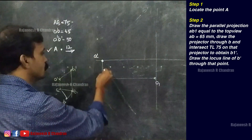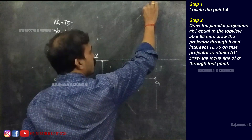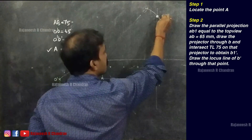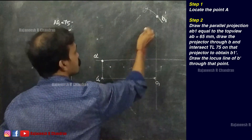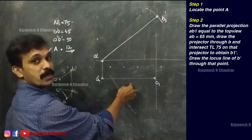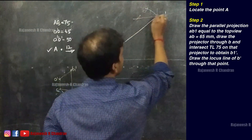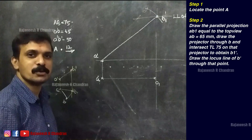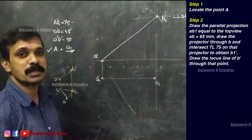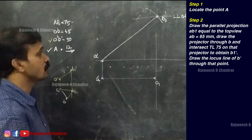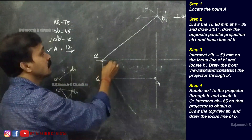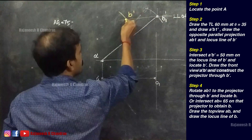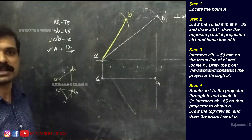So the opposite projection will be the true length. Keeping A' as center and at a radius of 75, we can intersect this line and name this point as B1'. So this will be the true length and this is the opposite parallel projection. Once we obtain B1', we can mark it as the locus line of B'. Now the picture is clear and it is very easy to solve. We have the locus line of B' and A'B' is also given as 50. So keeping A' as center and at a radius of 50, intersect the locus line of B' and name it as B'. Draw A'B'.